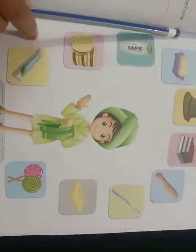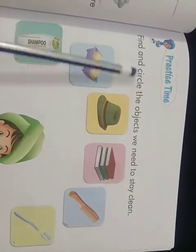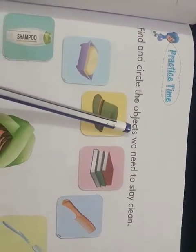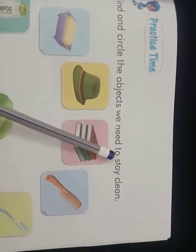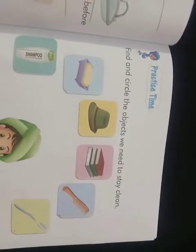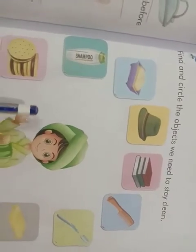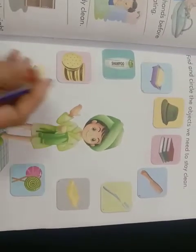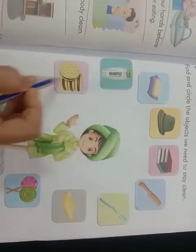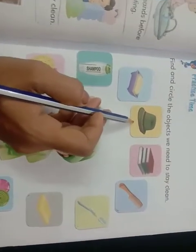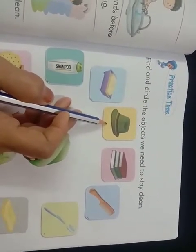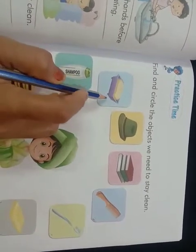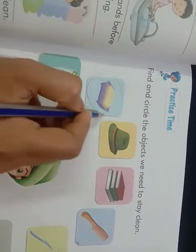Now come to page number 43. We will solve this page. Find and circle the object we need to stay clean. This question means, ke aapko isme se objects circle karne hain jo use karne se aap clean reh sakti ho. We will go through them one by one. This hat — no. Soap — does soap help us to clean? Yes, so we have to circle soap.